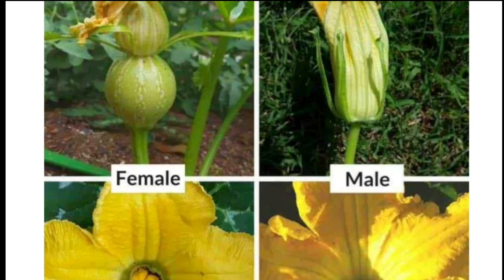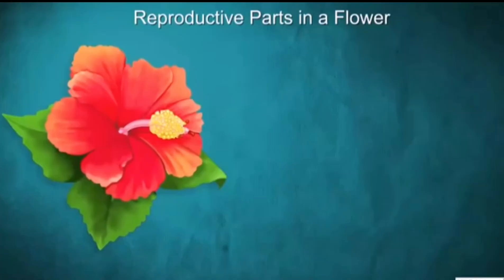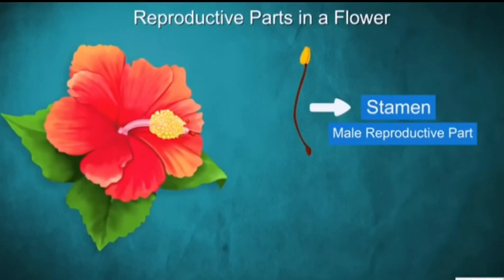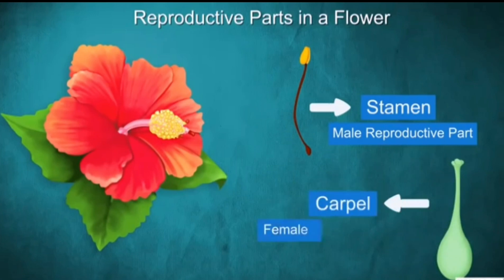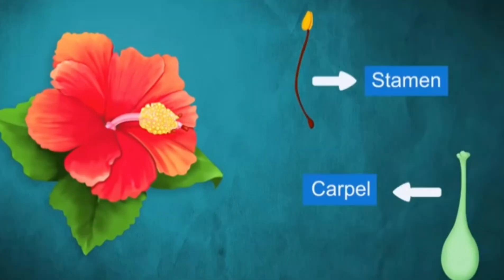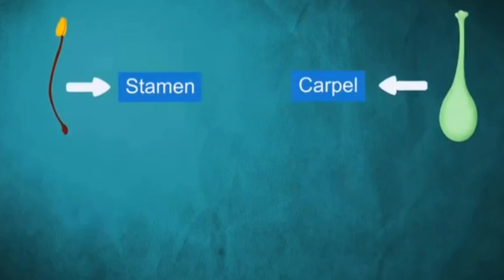Pumpkin flowers are unisexual flowers, which means each flower is either male or female. The male reproductive part is termed the stamen, and the female reproductive part is what we call the carpel or the pistil.